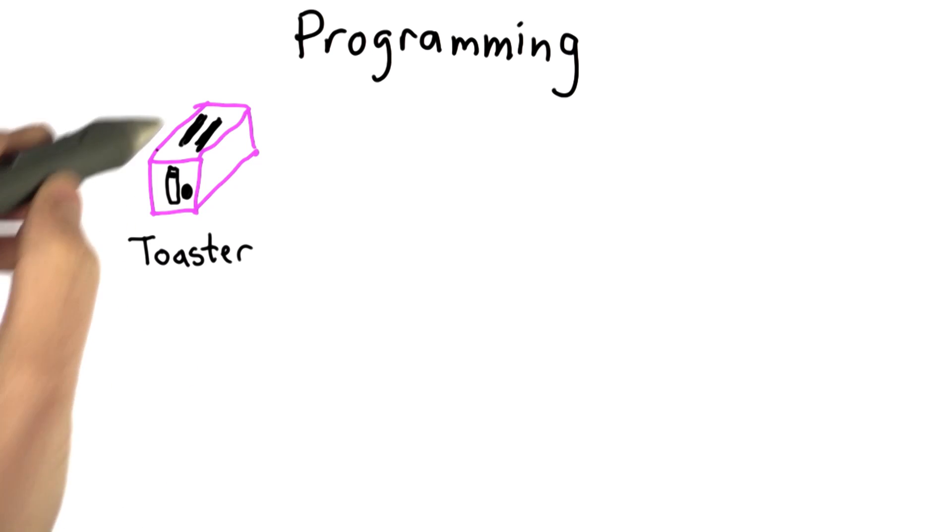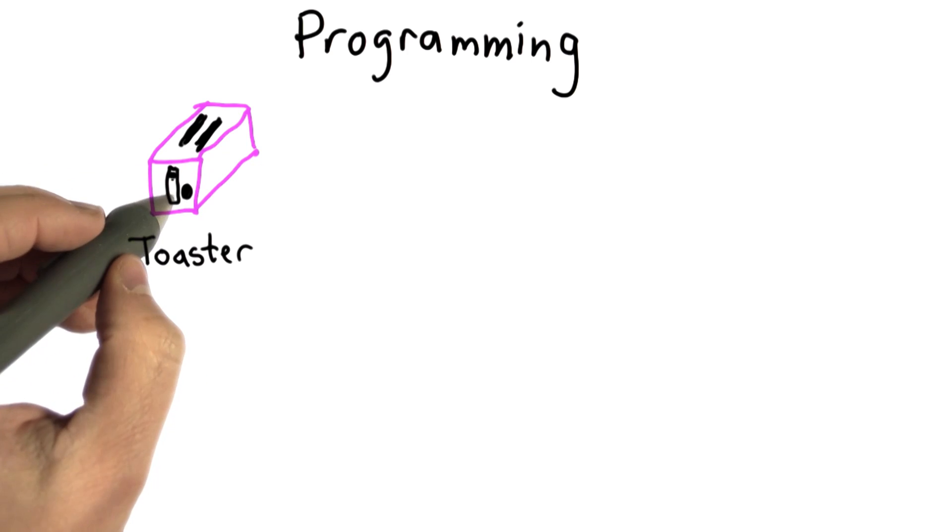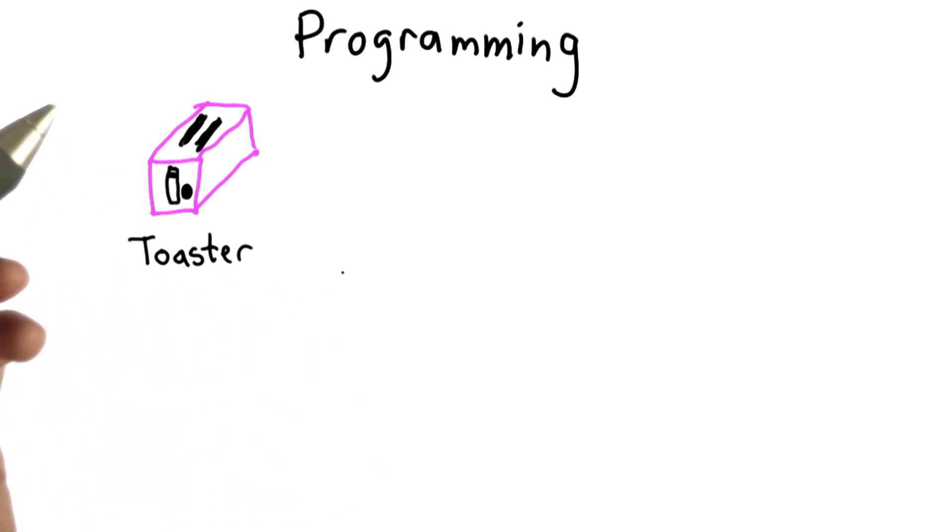If we want to change its behavior to do something really different, we'd have to physically alter the machine. We could take the parts out, put them together in a new way. If we're really creative, we could make a bicycle from the toaster. That would be a pretty big project, though.